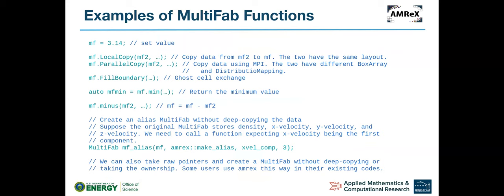MultiFab has a lot of built-in functions you can use. For example, you can set a value to the MultiFab, you can do a deep copy — actually copying data from one memory location to another — or a local copy where MPI is not involved. You can do a parallel copy when two MultiFabs have different BoxArrays or DistributionMappings, which internally calls MPI without you having to do so explicitly. FillBoundary does a ghost cell exchange, and you can also do global reductions, like computing the mean value, or subtract one MultiFab from another.